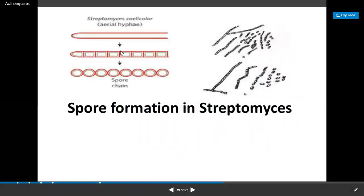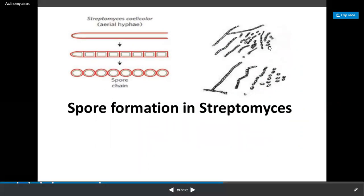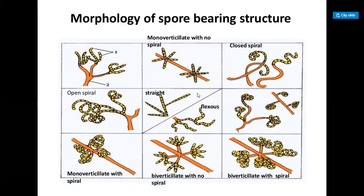This diagram indicates how the spores are formed. This is the vegetative structure, and the hyphae is formed. After formation of hyphae, spores are designated in chain form. This is the morphology - this is the morphology of the spore-bearing structure of the Streptomyces. These are the spore-following structures and this is the tip.